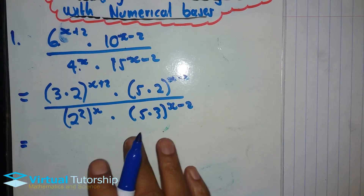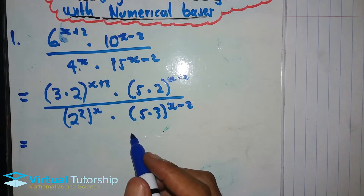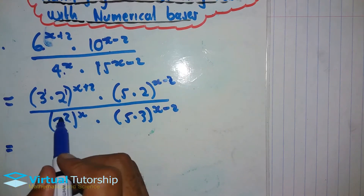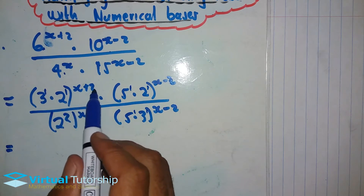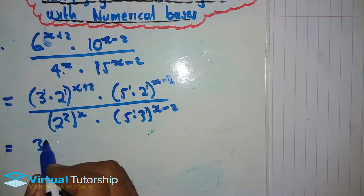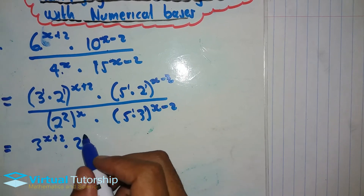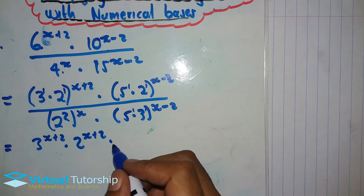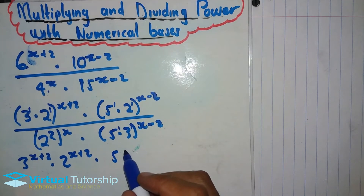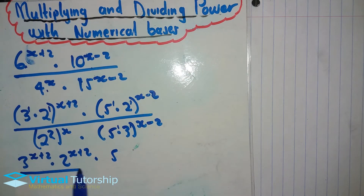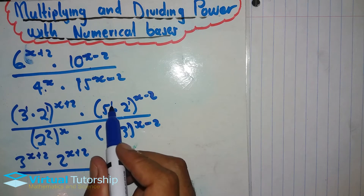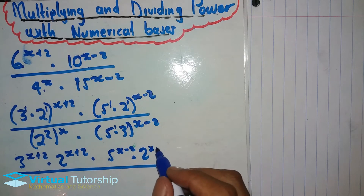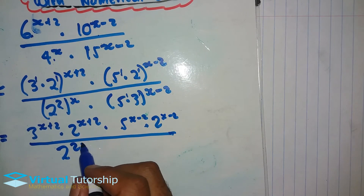After converting to prime bases, the next step is to solve for the brackets. For base 3, the exponent is x plus 2; for base 2, the exponent is x plus 2. When multiplying a bracket by an exponent, each exponent is affected — that's the exponential law. So we get 2 to the x minus 2, over 2 to the 2x, times 5 to the x minus 2, times 3 to the x minus 2.